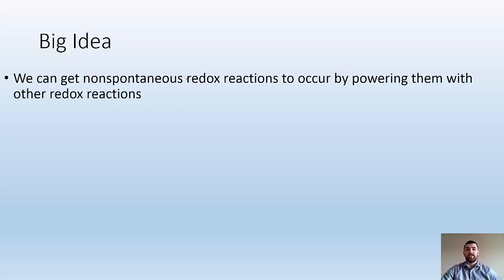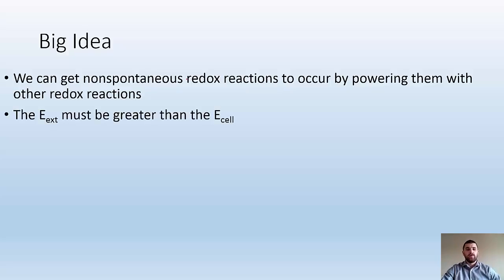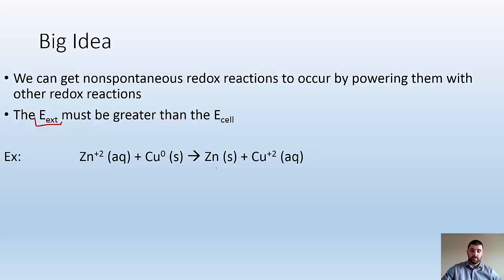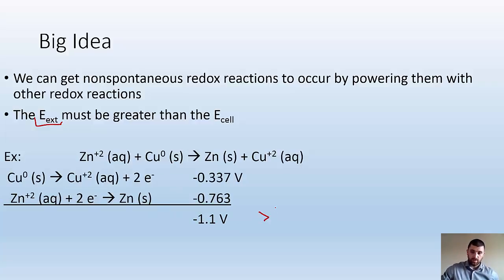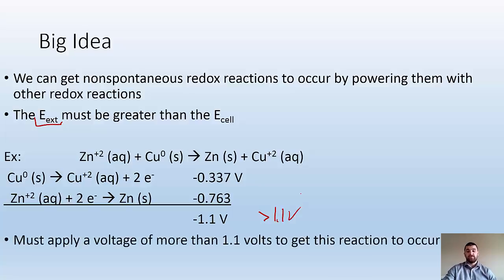Big idea: we can get non-spontaneous redox reactions to occur by powering them with other redox reactions. The external voltage must be greater than the E of the cell. So for example, here we have zinc being reduced and copper being oxidized — that's a non-spontaneous reaction giving negative 1.1 volts — but we can make that happen if we apply more than 1.1 volts to it. We're using another spontaneous reaction to power a non-spontaneous reaction.